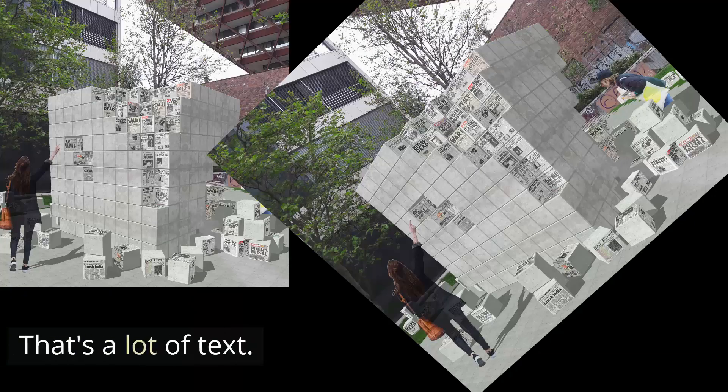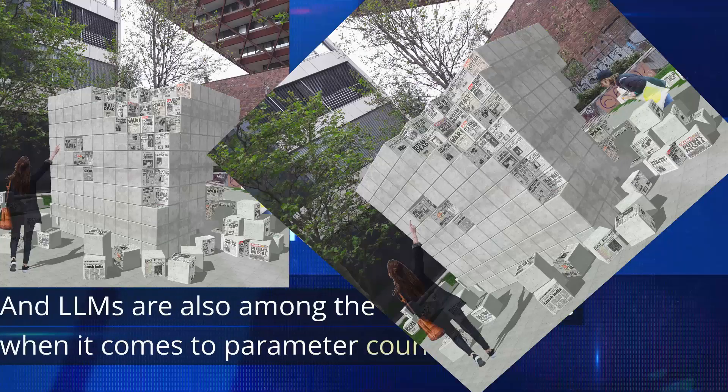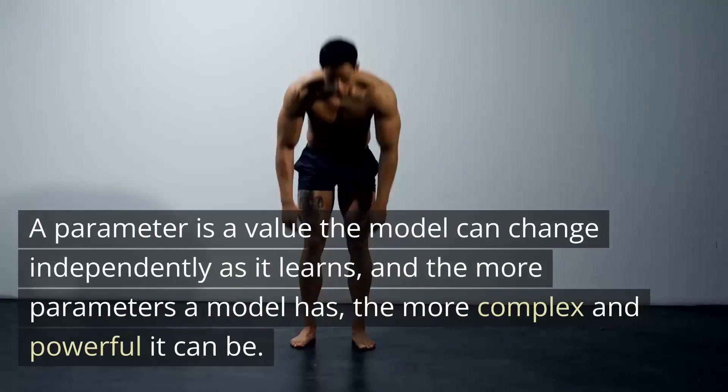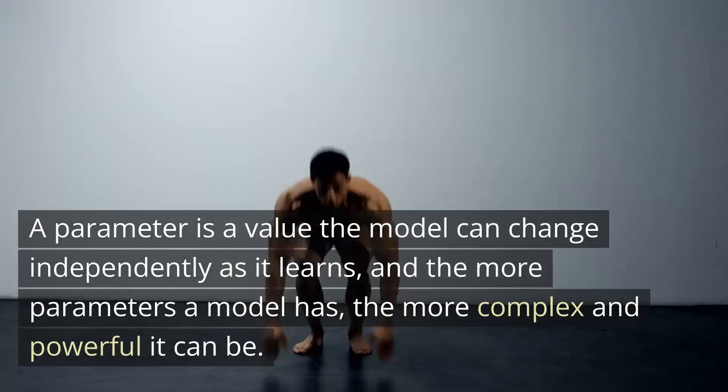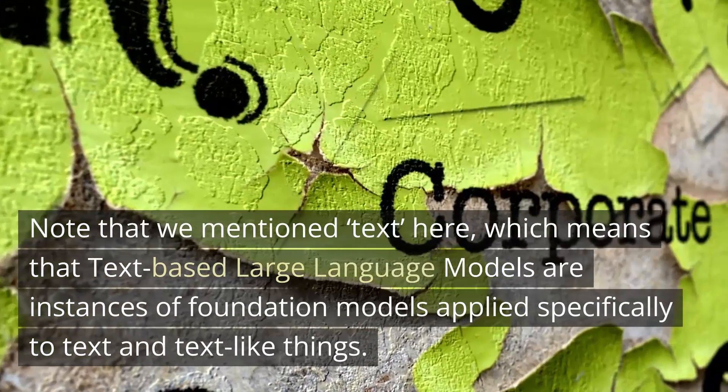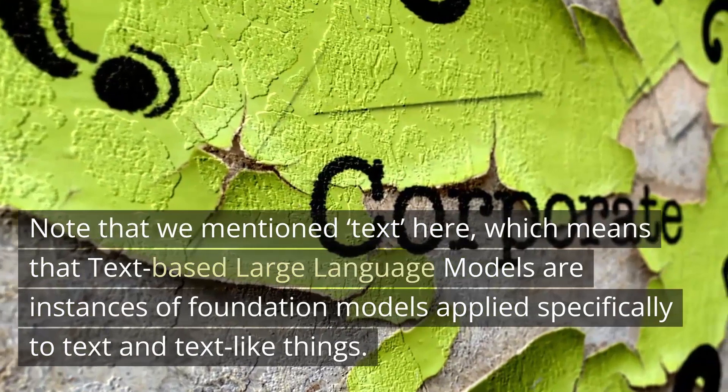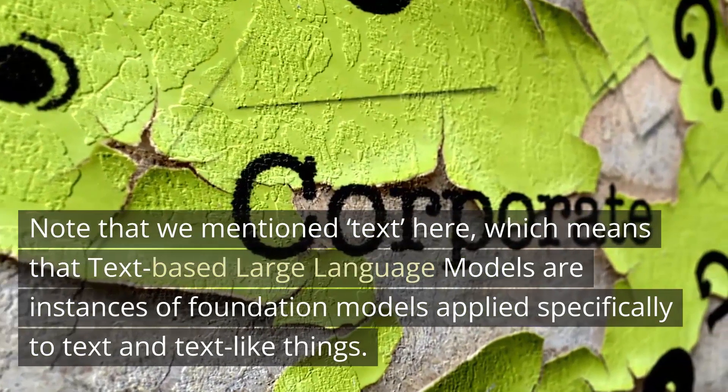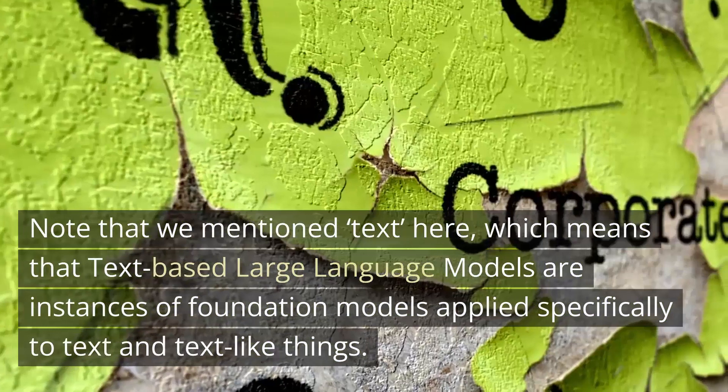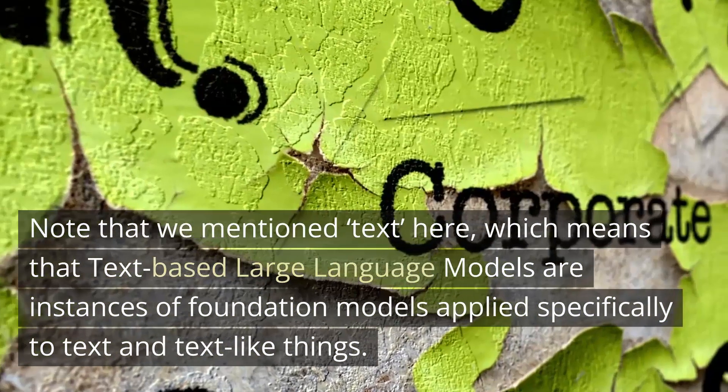And LLMs are also among the biggest models when it comes to parameter count. A parameter is a value the model can change independently as it learns. And the more parameters a model has, the more complex and powerful it can be. Note that we mentioned the term text.